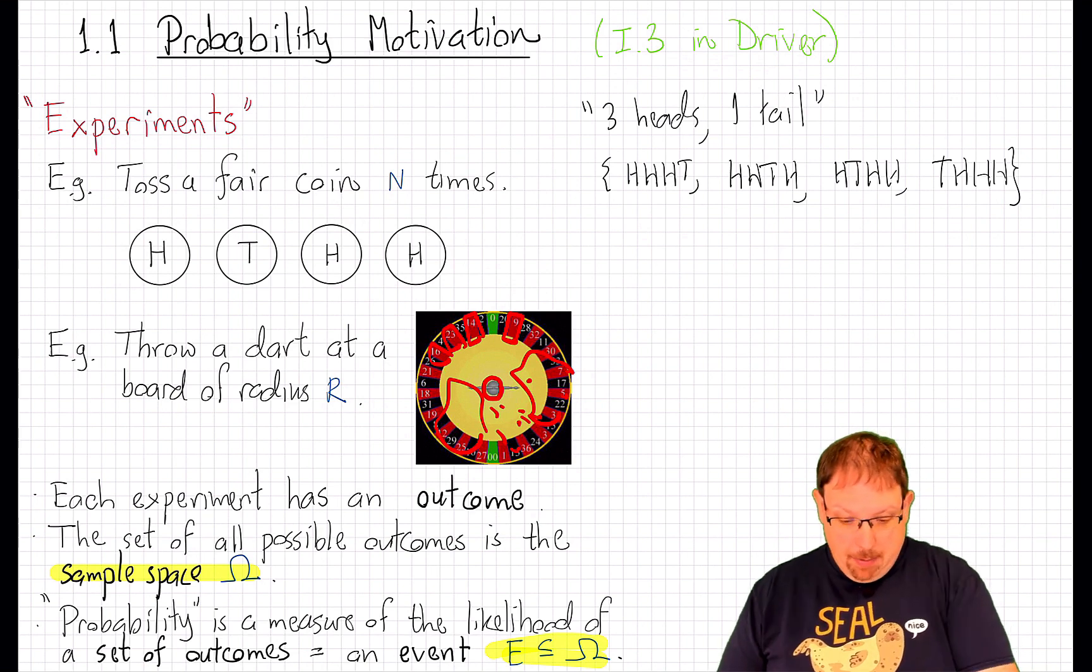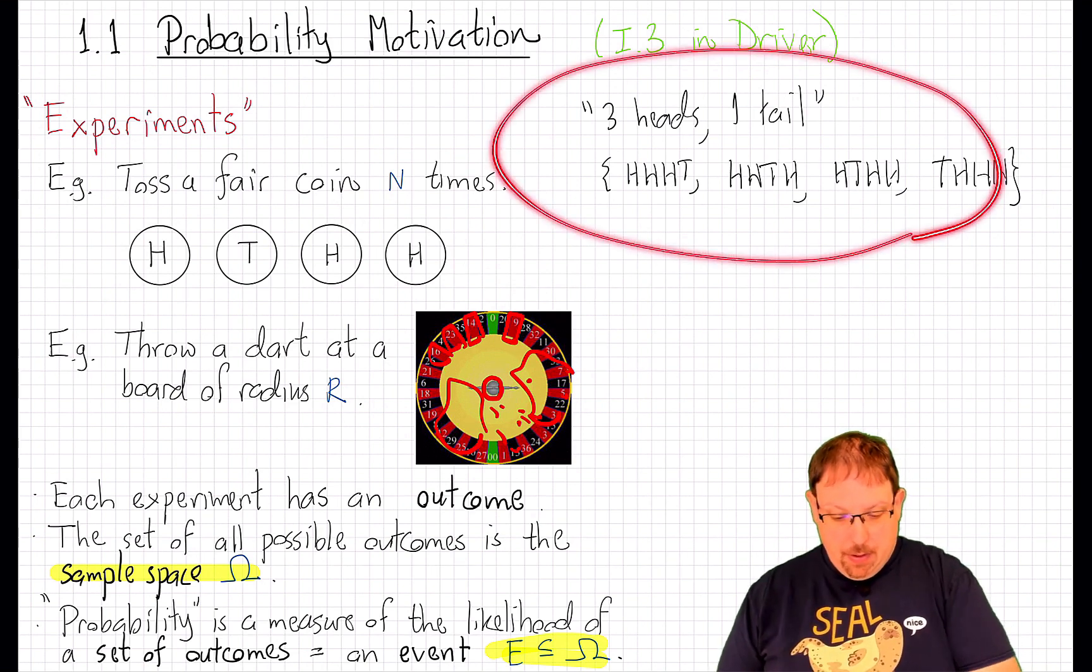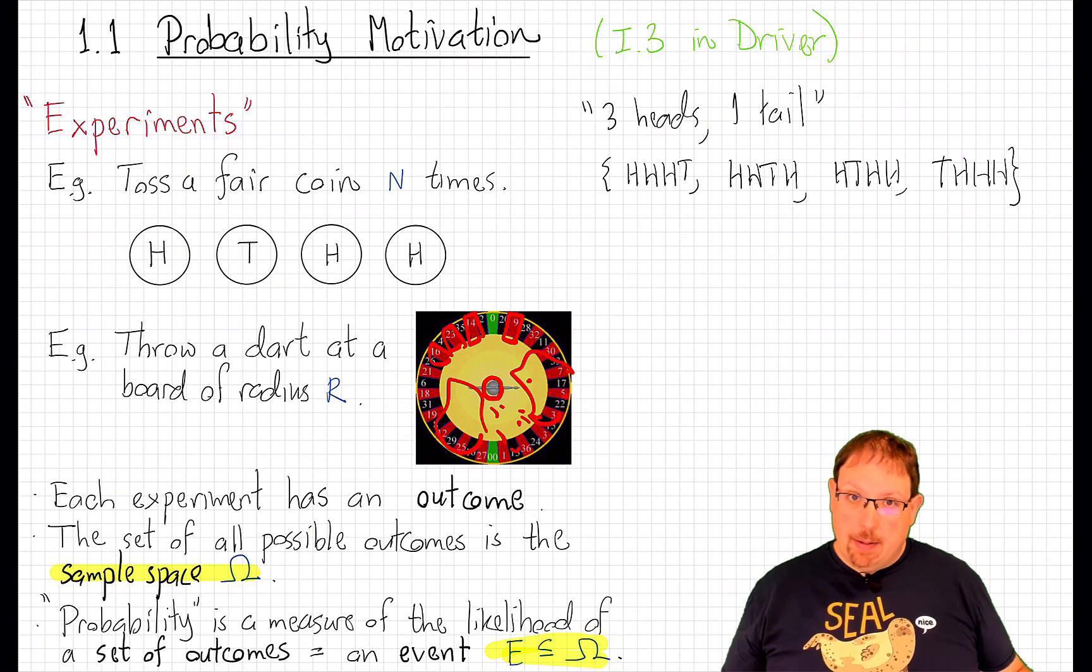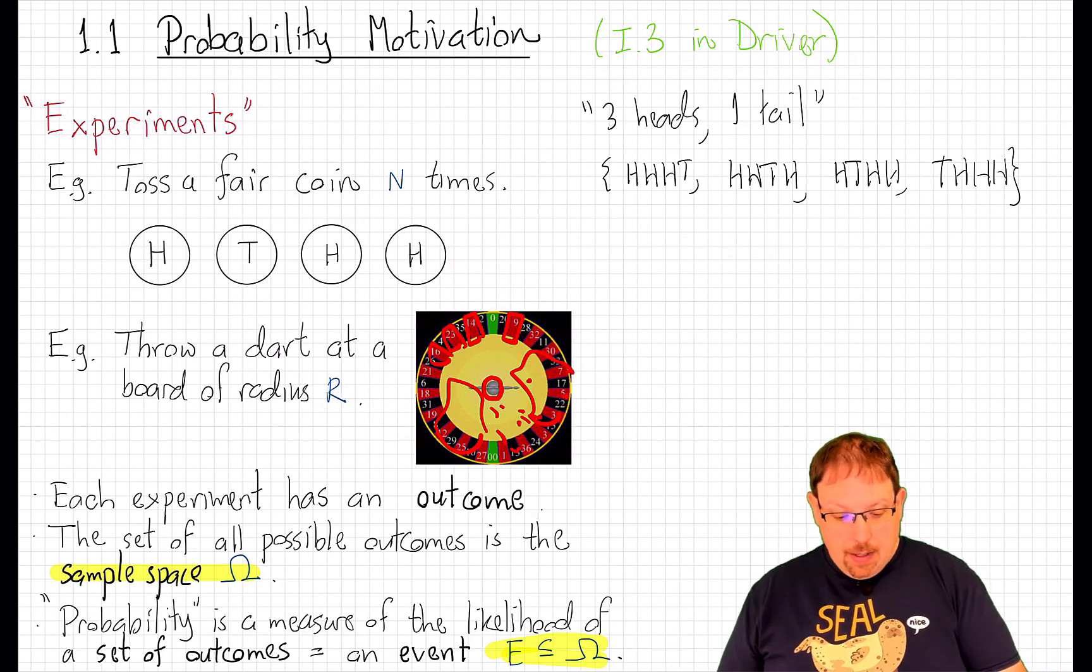Indeed, in the first example, here, there are only finitely many outcomes. And so there's really no point in talking about countable unions of disjoint sets. In this example, on the other hand, we have no choice.